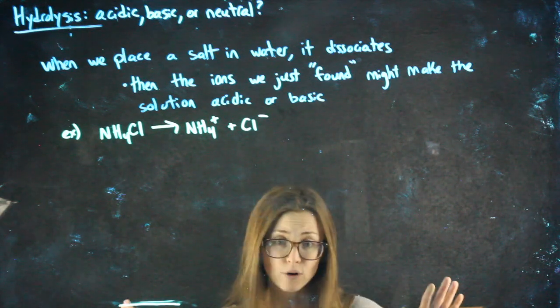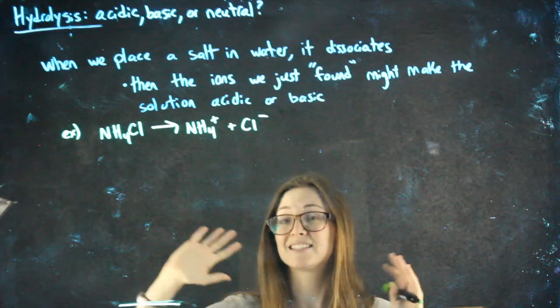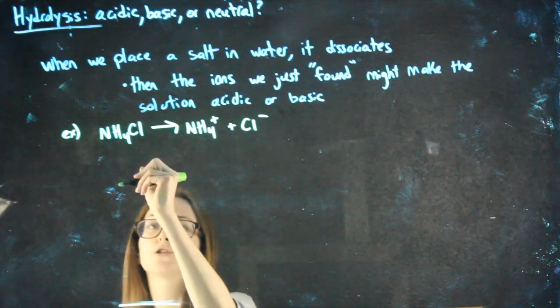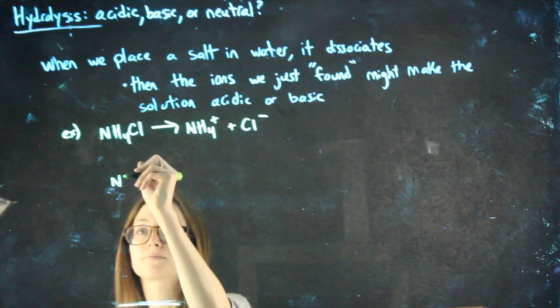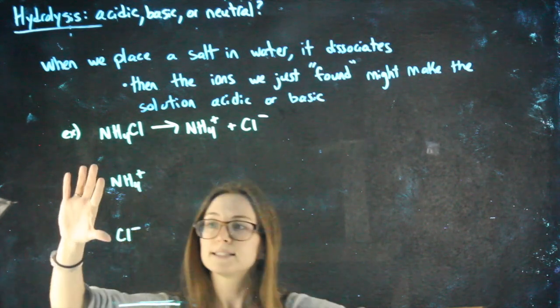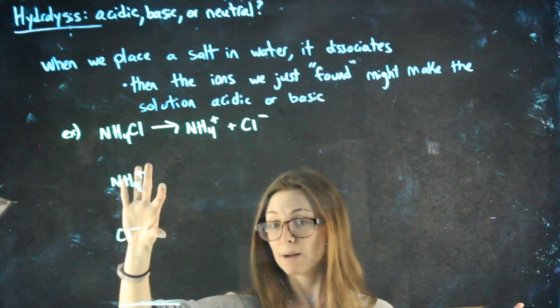So, this is my way of going about it. If you find a different way you like better, totally fine, but I think this at least explains what's going on. I'm going to take both of these ions, NH4+ and Cl-. And separately, I'm going to pretend to react them with water so that I can see what might happen.